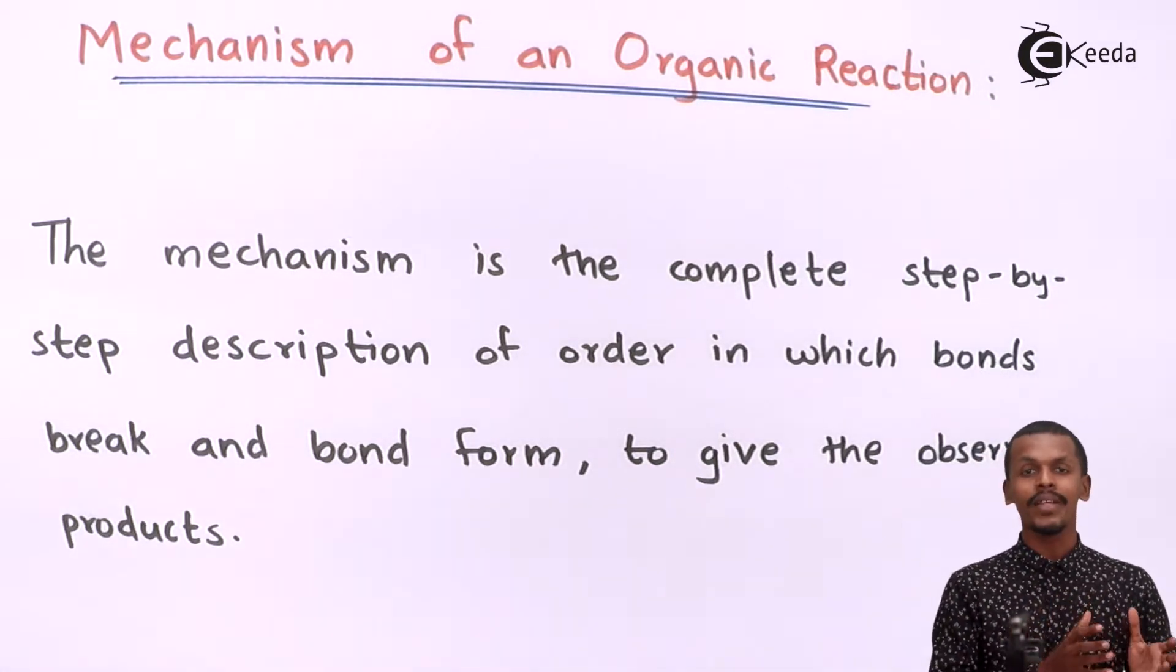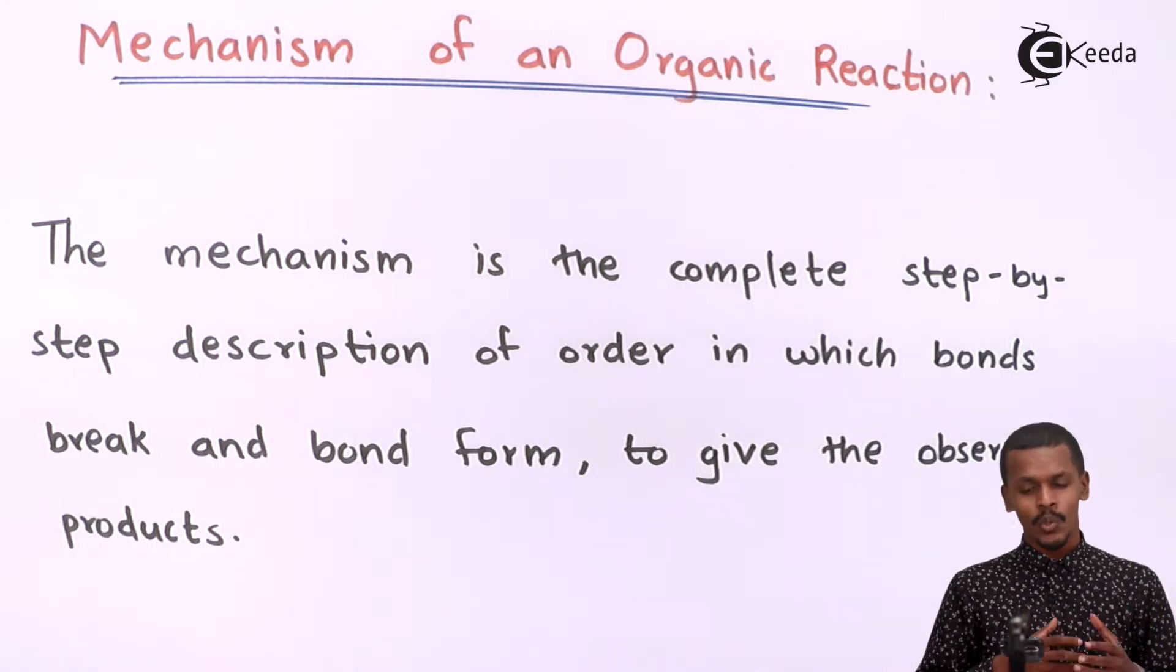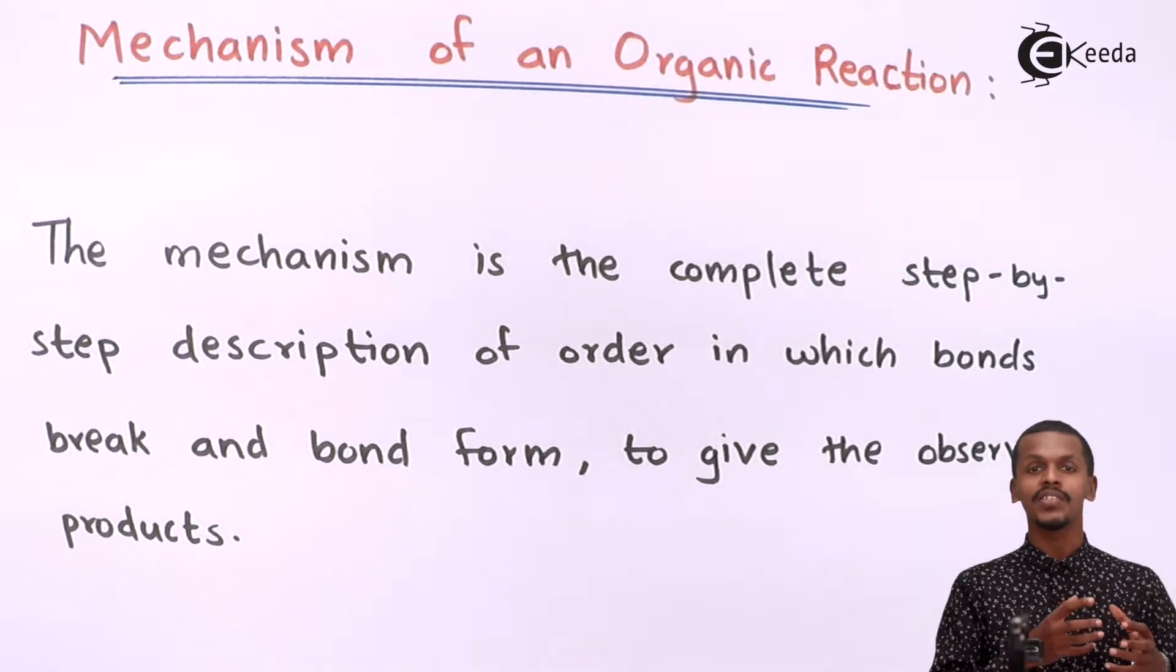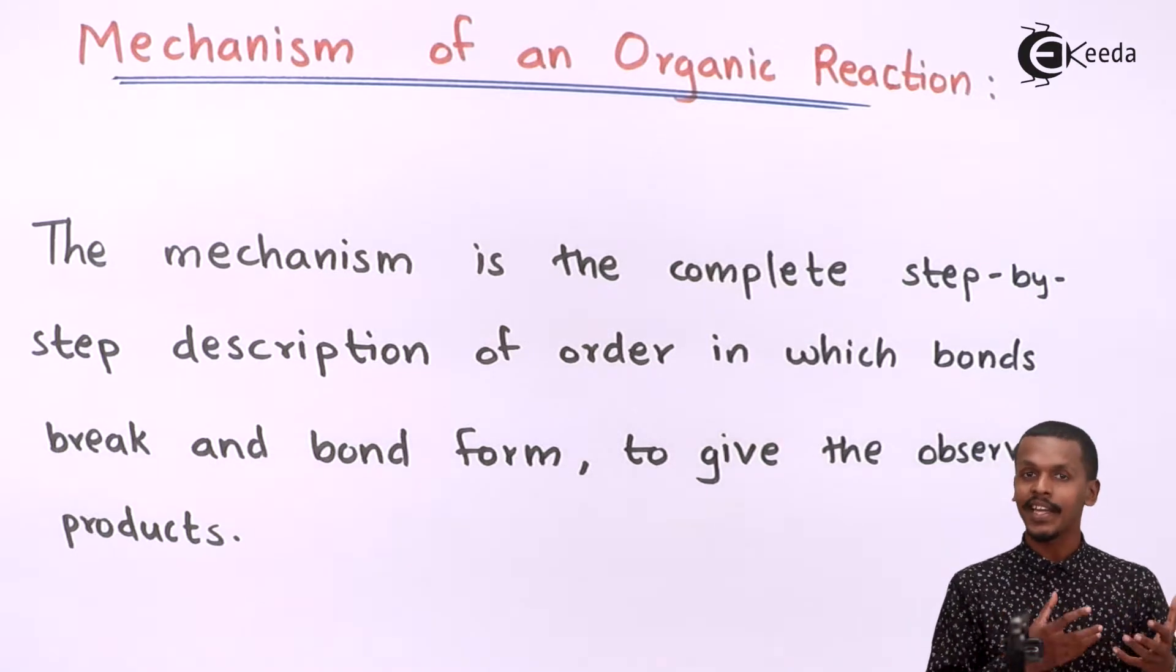The intermediates that have been formed in the reaction can be easily isolated or they cannot be isolated. In mechanism, we are learning how the reaction has taken place when two reactants are reacted to each other.